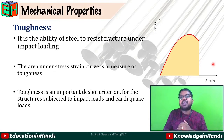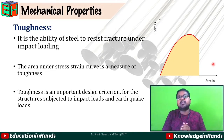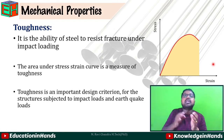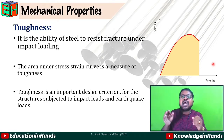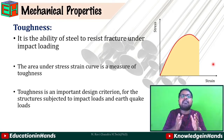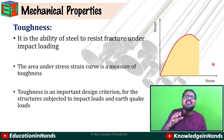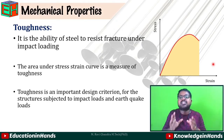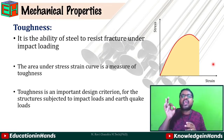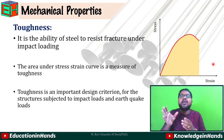Next, toughness. Toughness is the ability of steel to resist fracture under impact loading. Whenever a member is loaded with a certain impact, the ability of the steel to resist fracture is called toughness. The area under the stress-strain curve is the measure of toughness. Toughness is an important design criterion for structures subjected to impact loads like earthquakes — the material should be tough enough to resist that impact loading.